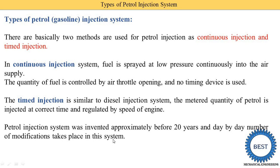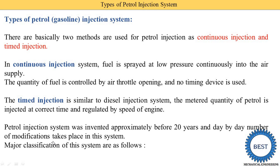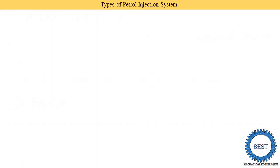The controlled injection system was invented approximately 20 years ago and day by day many modifications have taken place. The major classifications are: direct and indirect, single point and multipoint, and throttle and port type.